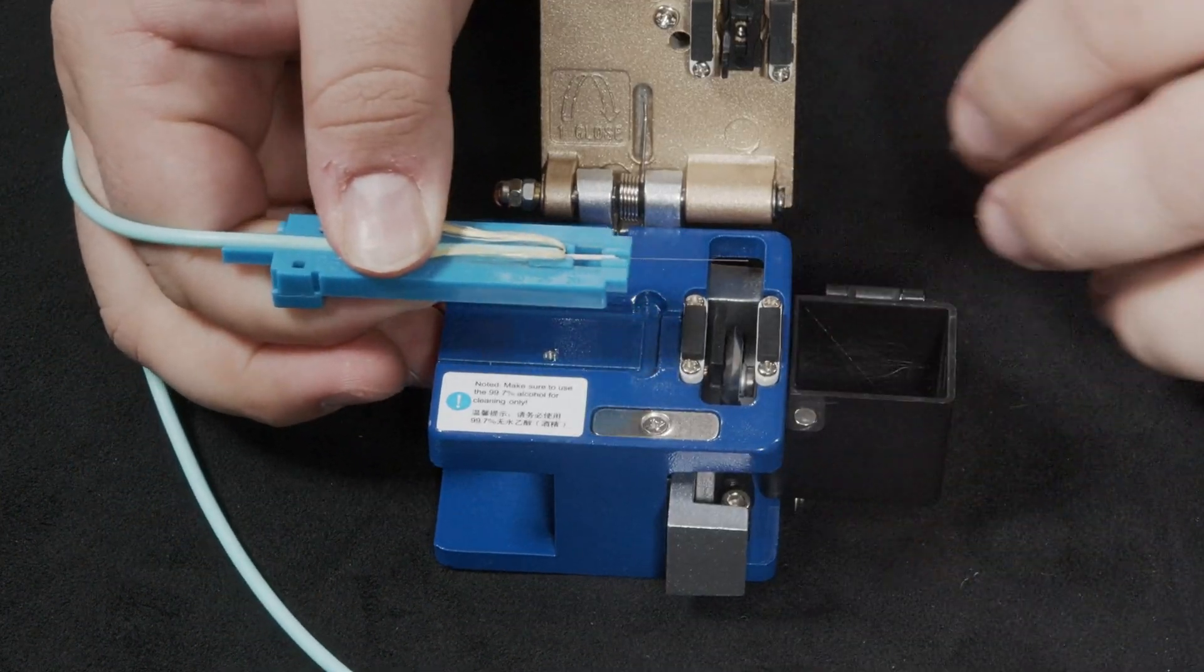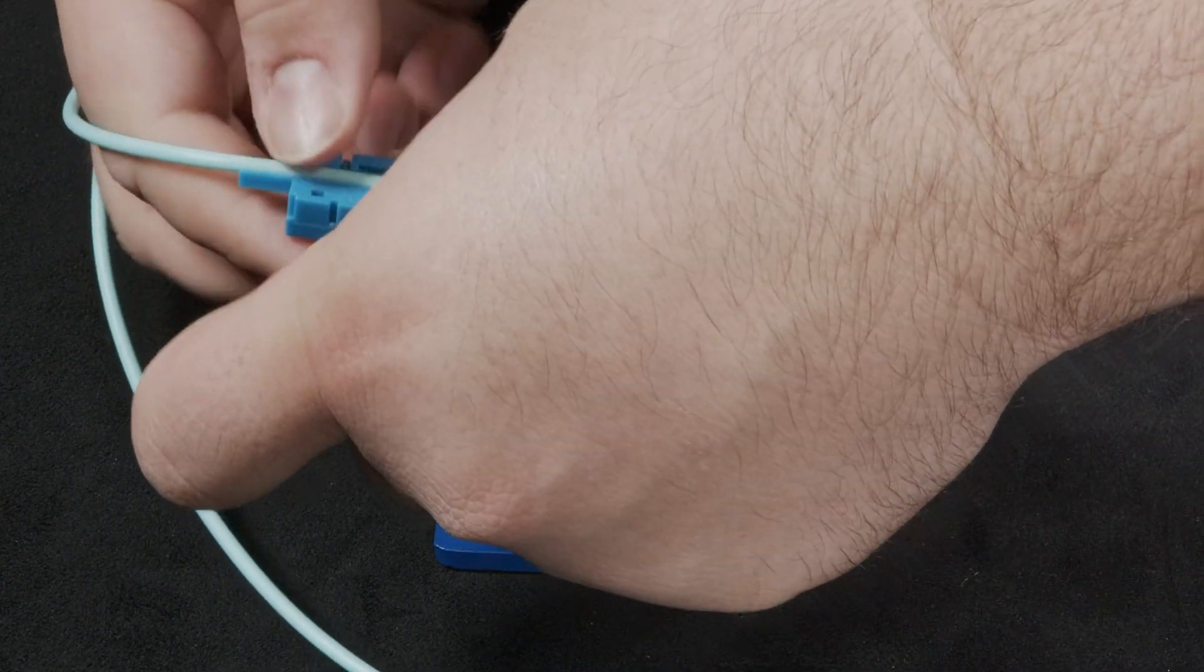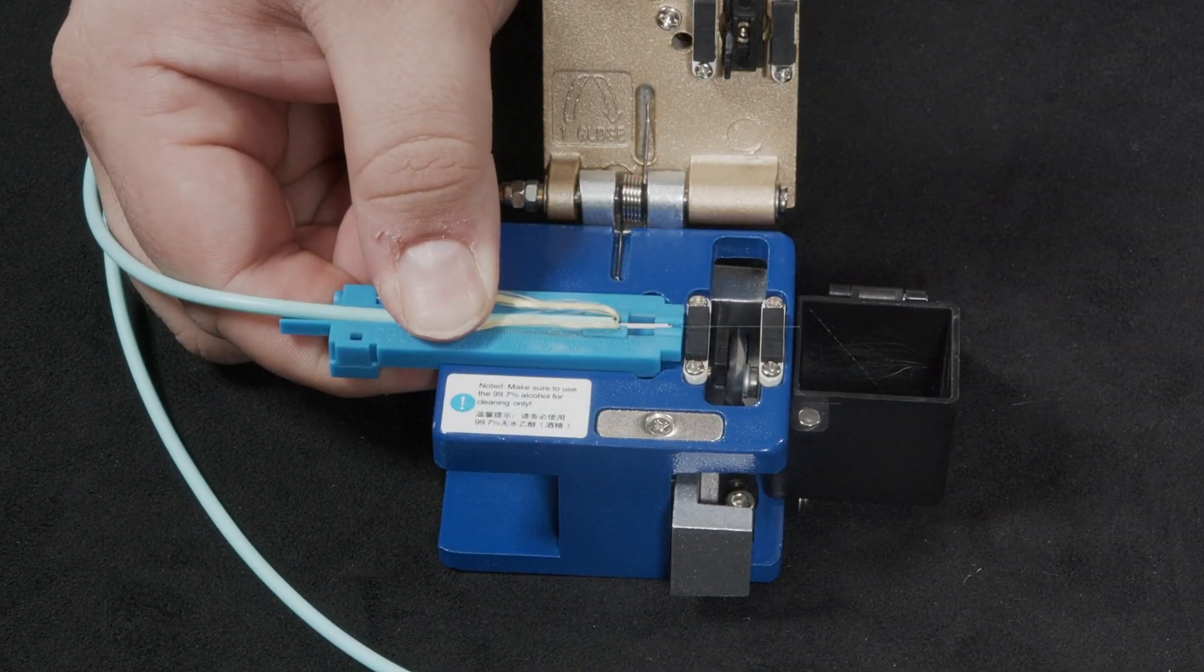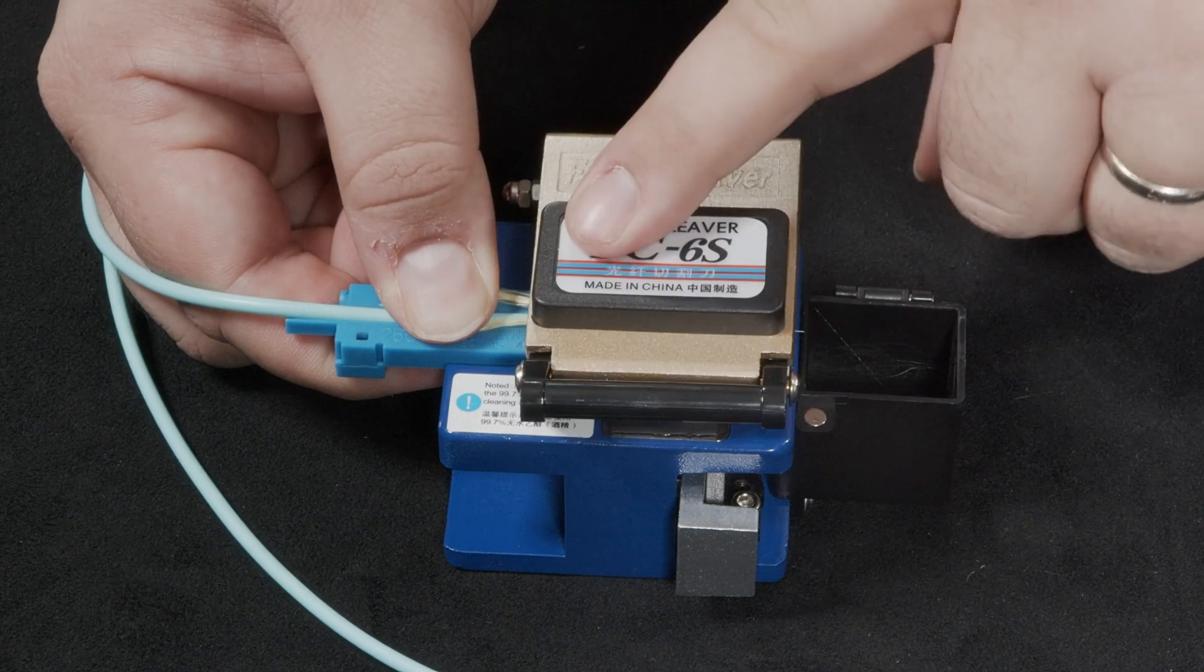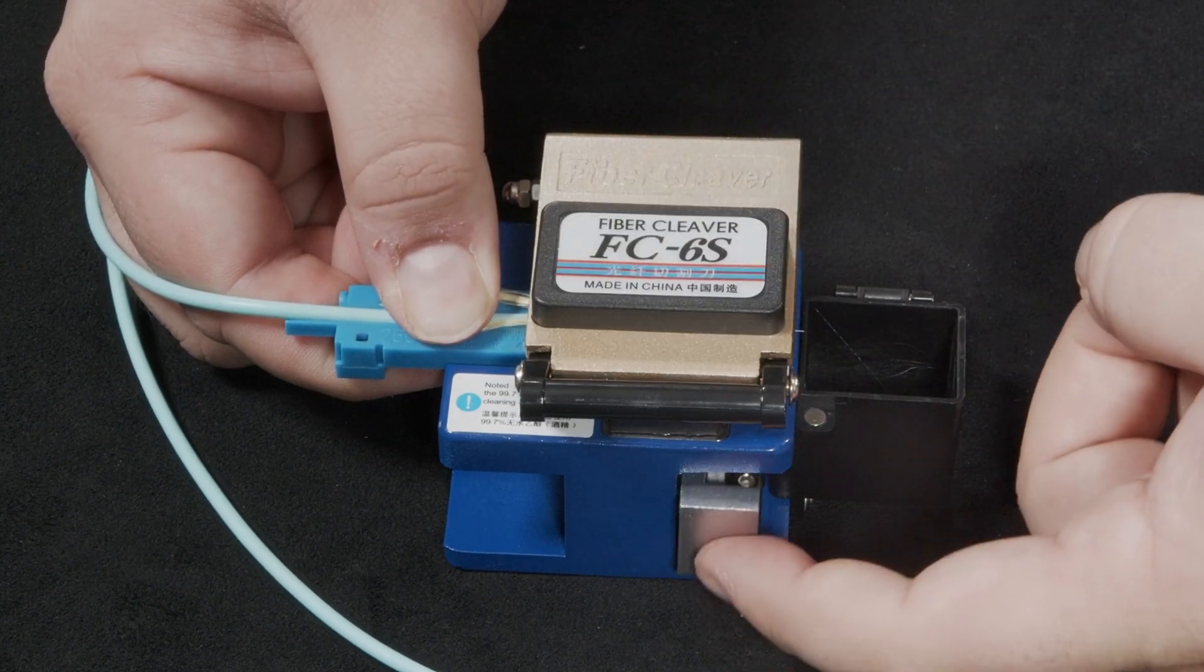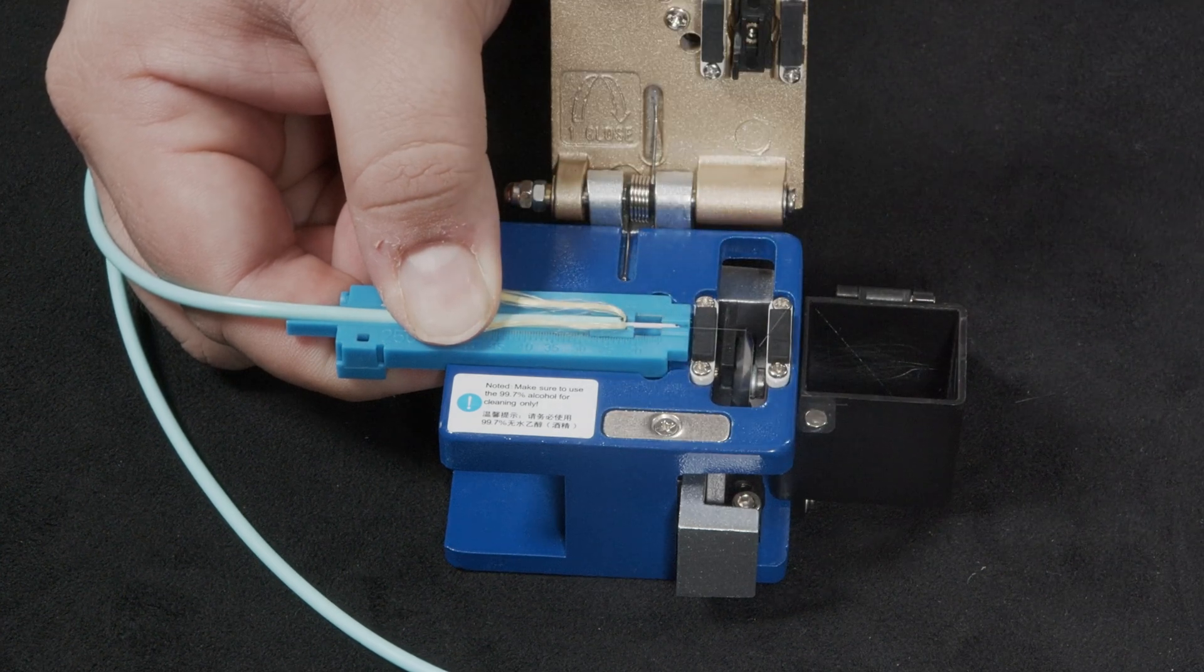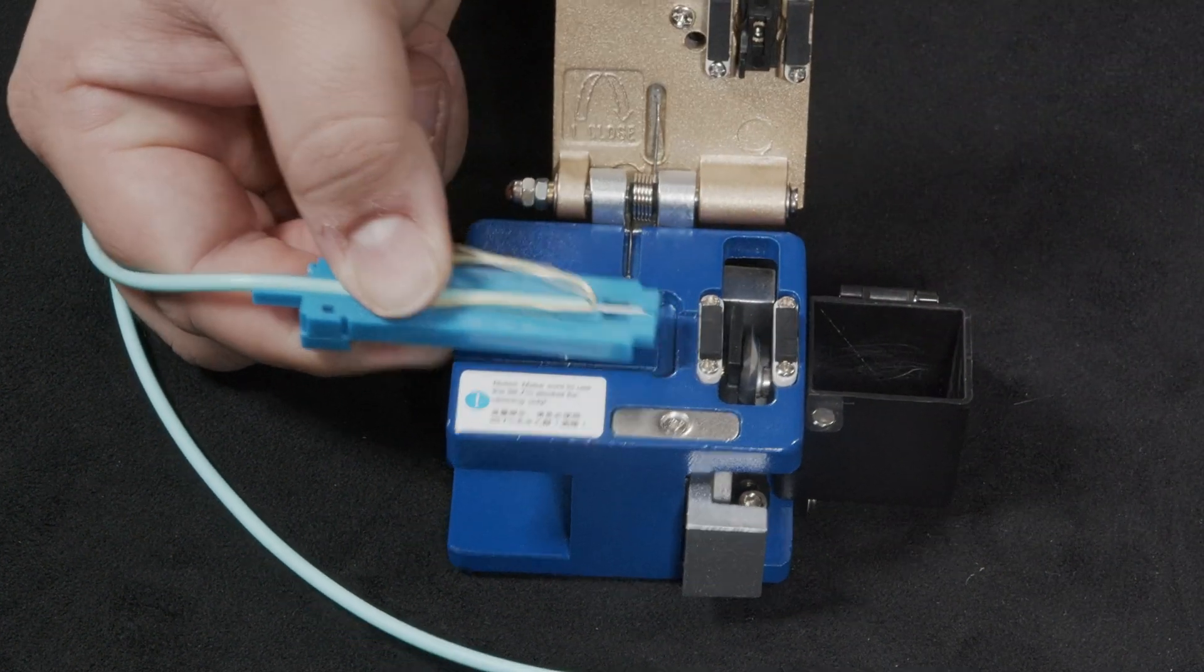While holding the fiber in the guide place it all within the fiber cleaver. The guide should rest neatly within the opening. Make sure your waste bin is open then close the lid and slide the silver handle back until it clicks. Open the cleaver and ensure that any excess fiber makes it to the waste bin.